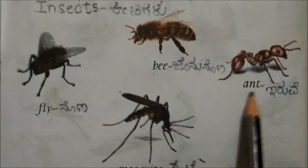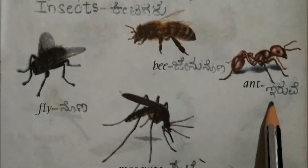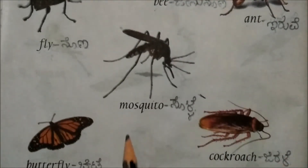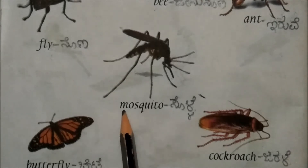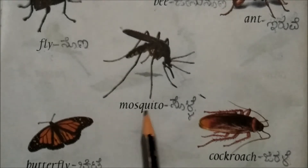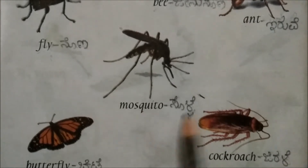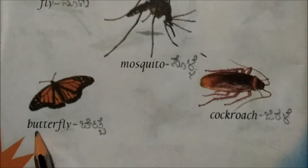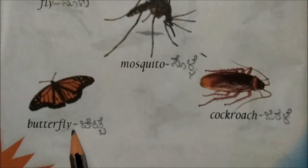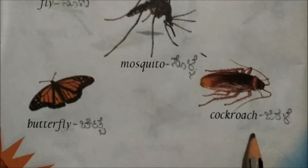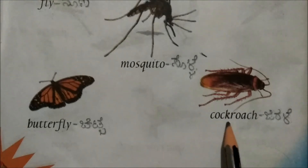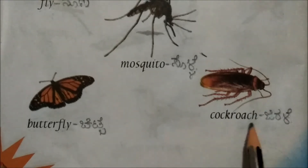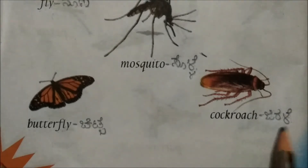This is ant. This is M-O-S-Q-U-I-T-O, mosquito. B-U-T-T-E-R-F-L-Y, butterfly. C-O-C-K-R-O-A-C-H, cockroach.